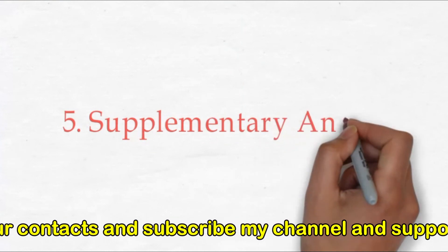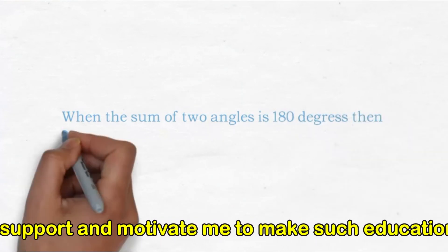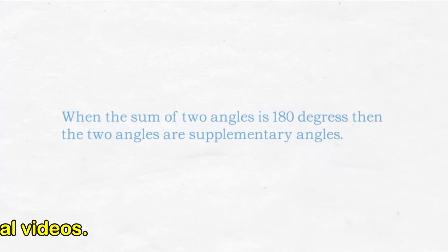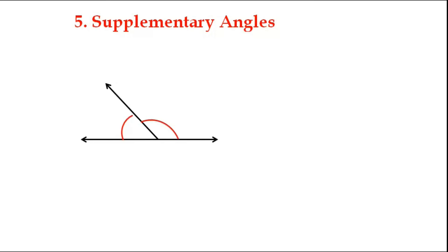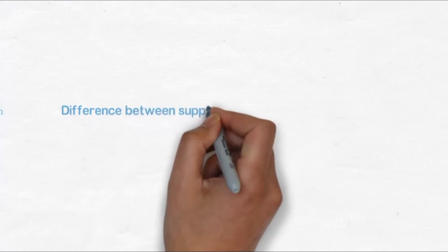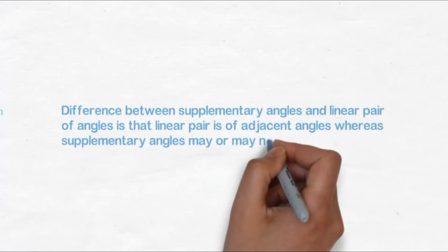Last: supplementary angles. When the sum of two angles is 180 degrees, the two angles are called supplementary angles. Supplementary angles may or may not be adjacent. Here one angle is 60 degrees and another is 120 degrees; their sum is 180 degrees, so they are supplementary angles. The difference between supplementary angles and a linear pair is that a linear pair consists of adjacent angles, whereas supplementary angles may or may not be adjacent.